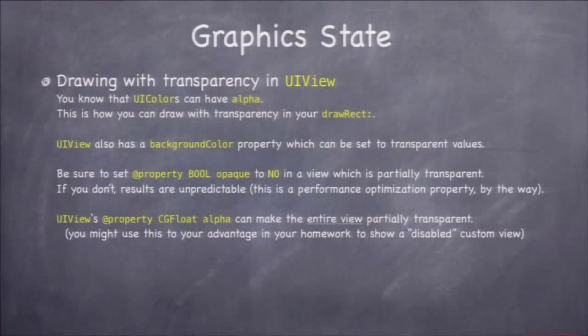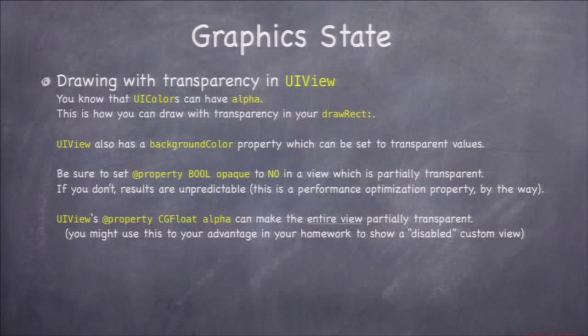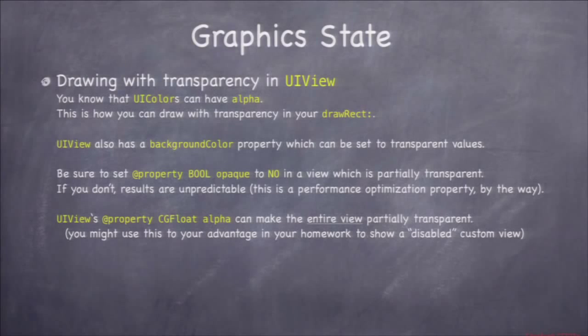UIViews are opaque by default with a white background color, so if you put a view on screen it comes out as a white rectangle. For something like a playing card, you want the corners to show through whatever is behind it. To turn off opaqueness, you set the opaque property on UIView to NO. Even if you set the background color to nil, it still won't be transparent unless you set opaque to NO.